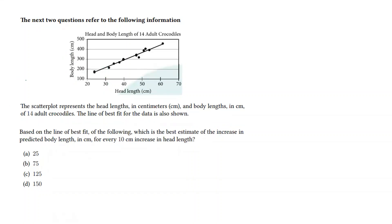Here is the second question to the same stem information. Based on this line of best fit, we want to estimate the increase in predicted body length for every 10 centimeters increase in head length. So if we look at our head length and we increase, say, from 40 to 50, that is an increase of 10 centimeters.